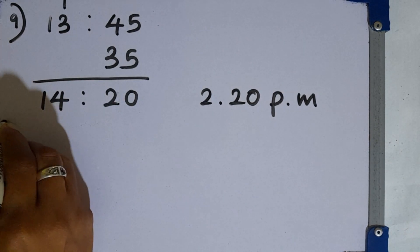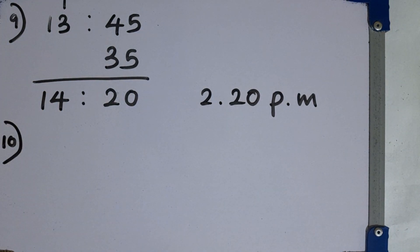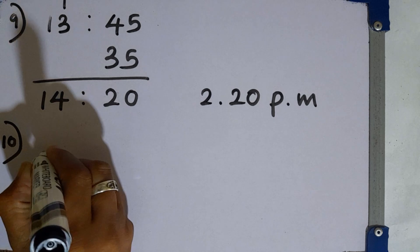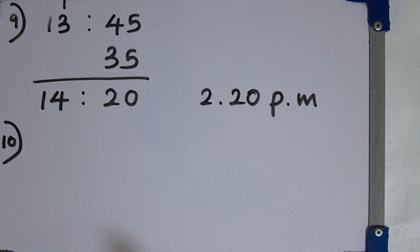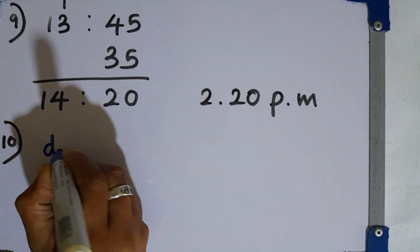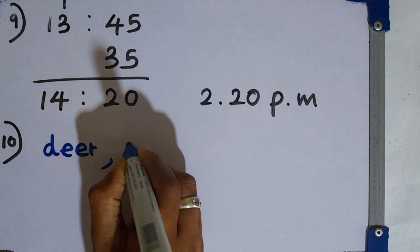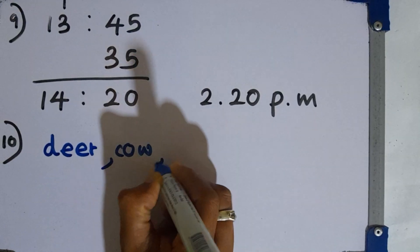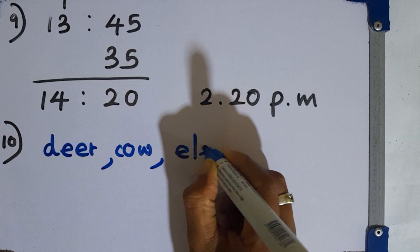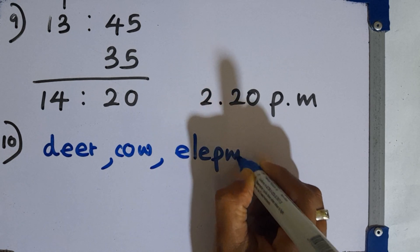Then question number 10. Name 2 herbivorous animals in the group of 4 footed animals. You can take examples as deer, then cow, or elephant. Animals like these. These are herbivorous.